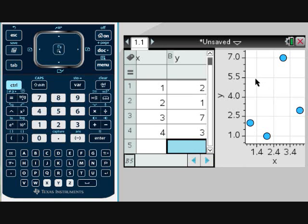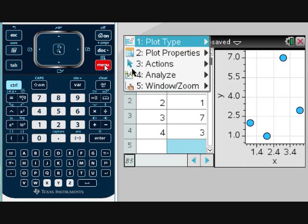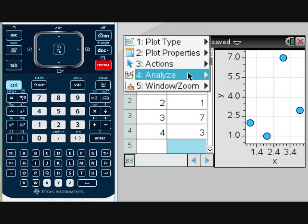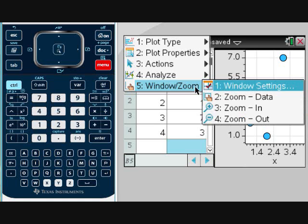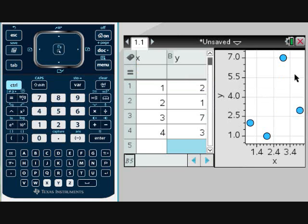So in case you cannot see all your points, you can always go back and click on your graph side. Go to menu and notice how you have window zoom. And this option, number 2, zoom data, is very interesting because what it will do is fit all your points on your table in case you cannot see them.